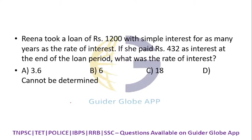Arena took a loan of rupees 1200 with simple interest for as many years as the rate of interest — that means the rate of interest and number of years (n) are the same. If she paid 432 as interest at the end of the loan period, what was the rate of interest? The formula for simple interest is SI = PNR divided by 100.